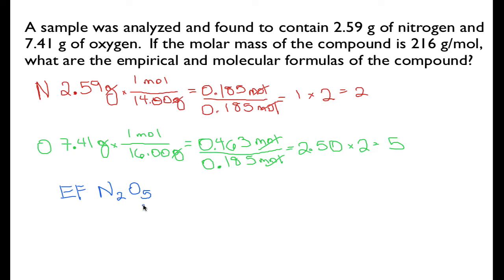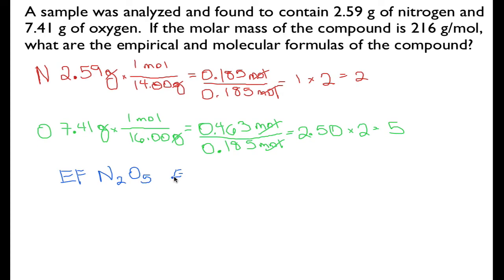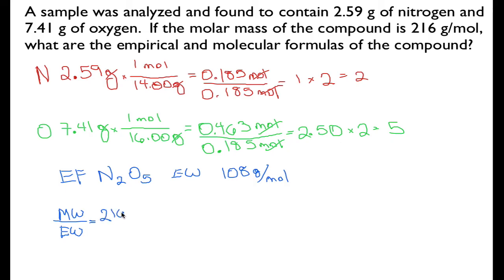We've also been asked to determine the molecular formula. To do that, we compare the molecular weight to the empirical weight. The empirical weight for N₂O₅ — the molar mass — is 108 grams per mole. We're told the molecular weight is 216 grams per mole.